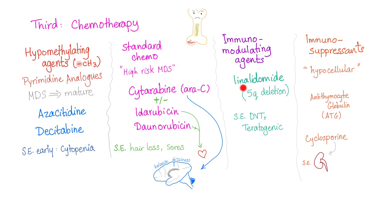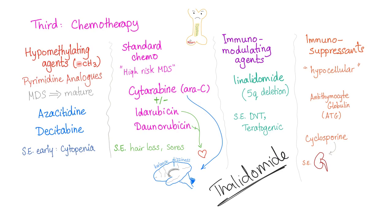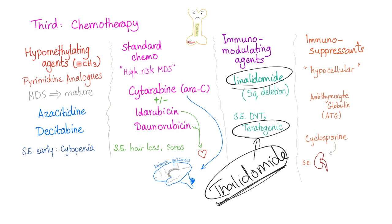Immunomodulating agents such as lenalidomide are used for the 5q deletion subtype of MDS. Side effects of lenalidomide include deep vein thrombosis and teratogenicity. Recall that thalidomide, also used to treat multiple myeloma, is similarly teratogenic — both lenalidomide and thalidomide are teratogenic.